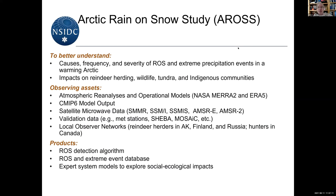Just an overview: this rain-on-snow study, we call it AROS. What are we trying to do? We're trying to understand the causes, frequency, and severity of these rain-on-snow events as well as extreme precipitation events in a warming Arctic. As the Arctic warms up, we could be having more — and more severe — rain-on-snow events. We're very interested in impacts on reindeer herding, wildlife, tundra, and indigenous communities. We're focusing today on the physical aspects: what observing assets can we use to detect rain-on-snow events and map them across the entire Arctic landscape for several decades?